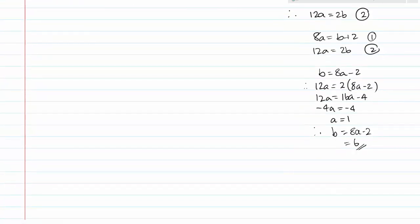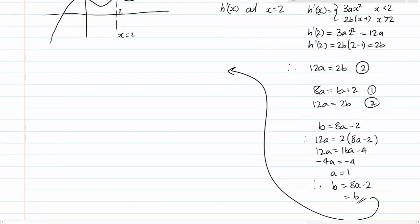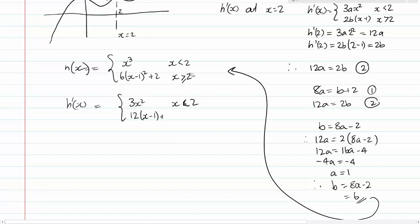So we have a equals 1 and b equals 6. And so therefore h of x is equal to these two functions: x cubed for x is less than 2 and 6 times x minus 1 squared plus 2 for x is greater than or equal to 2. And consequently we have our h dash of x function is equal to 3x squared for x is less than 2 and 12x minus 1 for x is greater than or equal to 2.